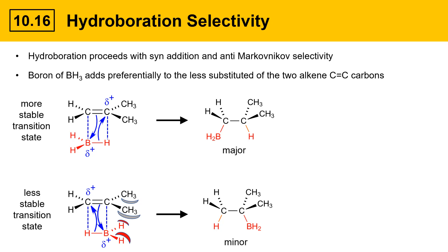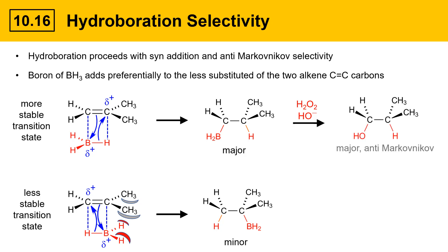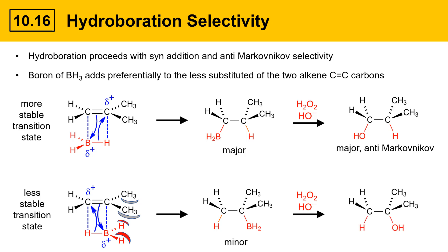Each of these species can then be carried on to form an alcohol by treatment with hydrogen peroxide and hydroxide, which replaces boron with an OH group. The major product is an anti-Markovnikov alcohol because the OH group added to the less substituted of the two alkene carbons. The minor product, where boron was on the more substituted carbon, is oxidized similarly to produce a tertiary alcohol — a Markovnikov-type product.